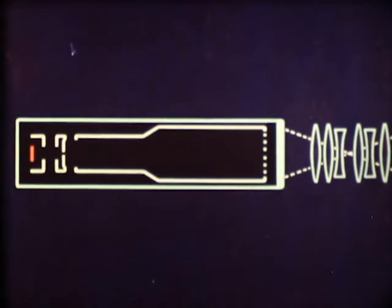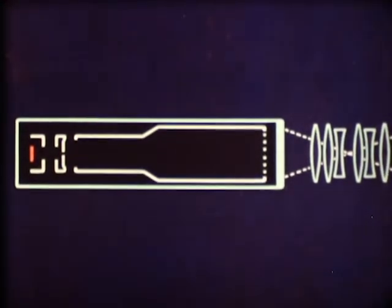But what is the effect of this scanning process on the signal plate? And how is the picture signal obtained? As we have already seen, the signal plate is situated at the front of the camera tube.